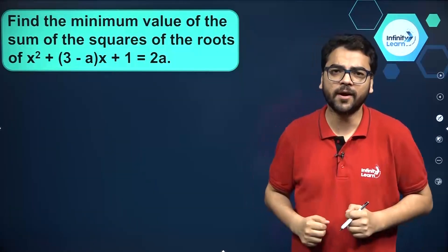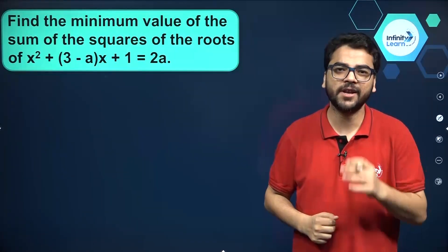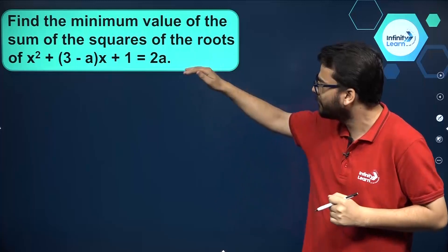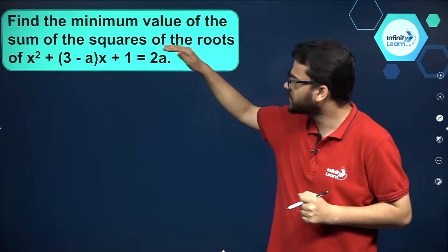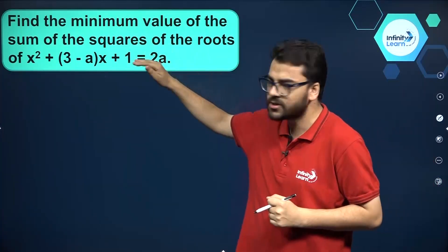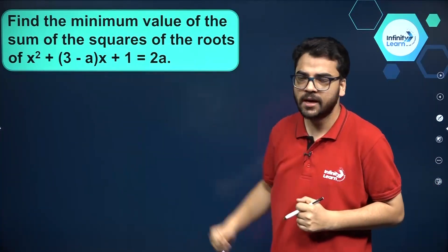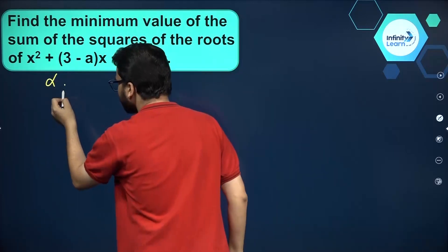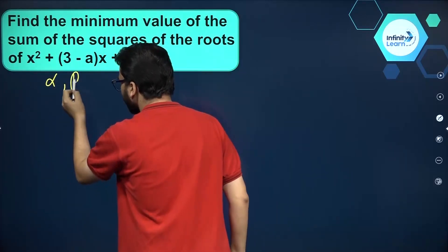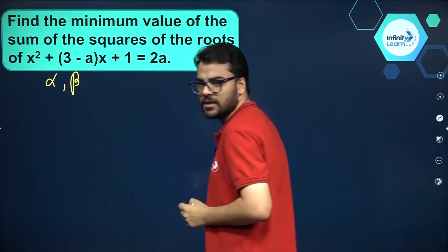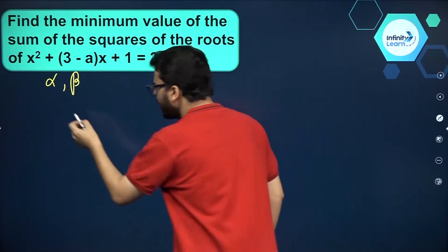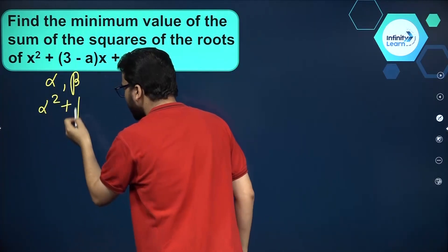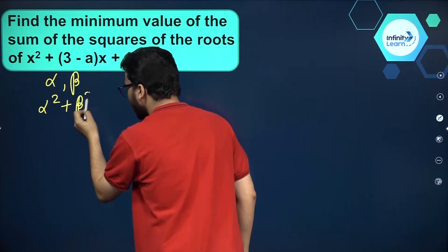We have a quadratic equation in which we have to find the minimum value of the sum of the squares of the roots. Suppose alpha and beta are the roots of this quadratic equation. We have to find the minimum value of alpha square plus beta square.